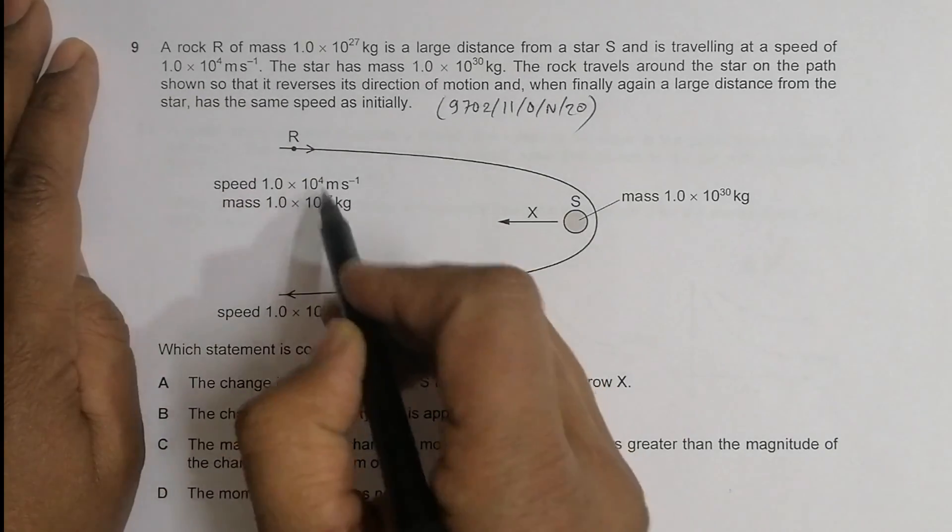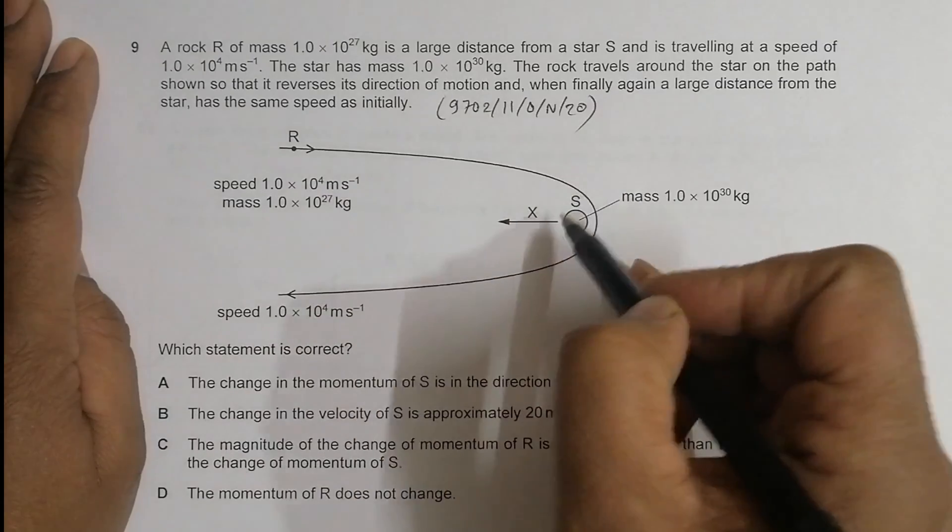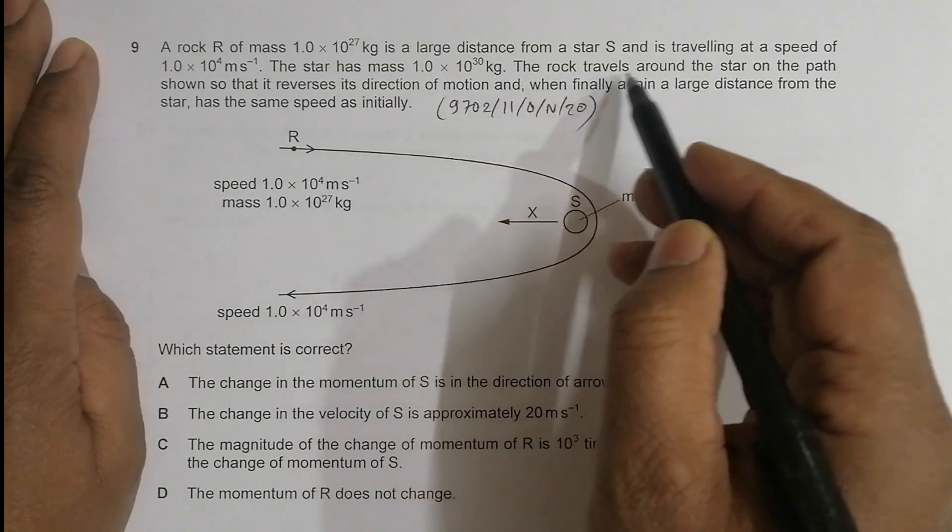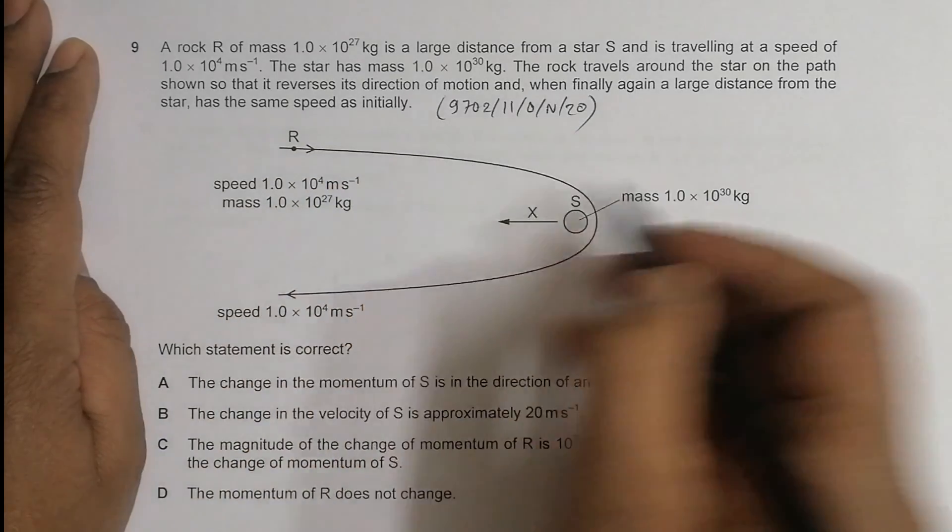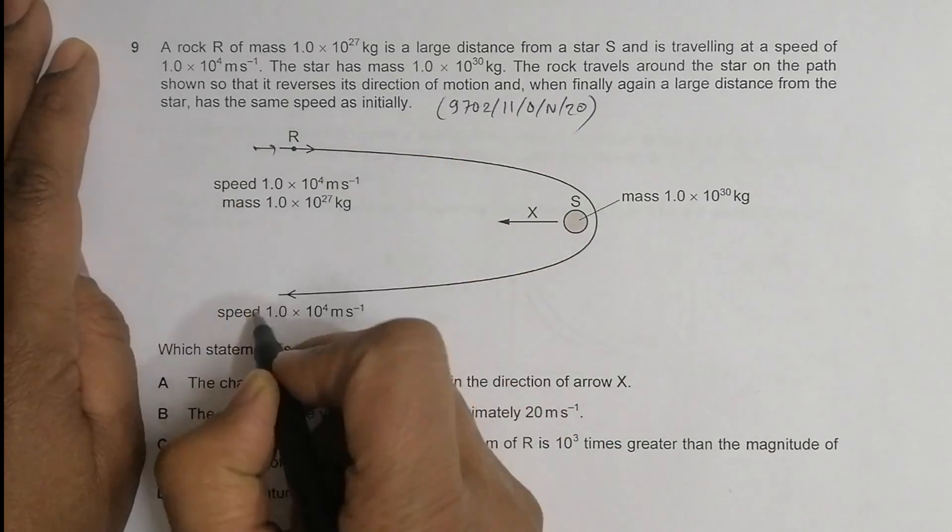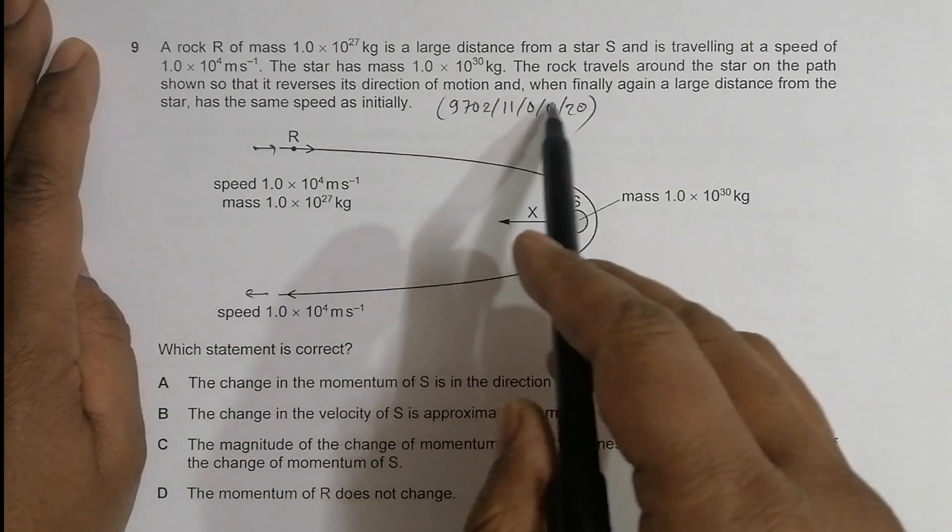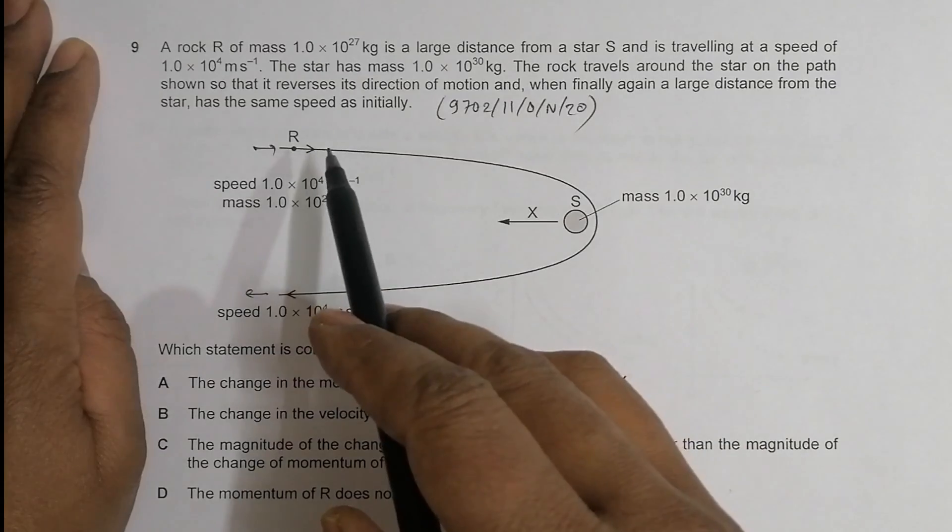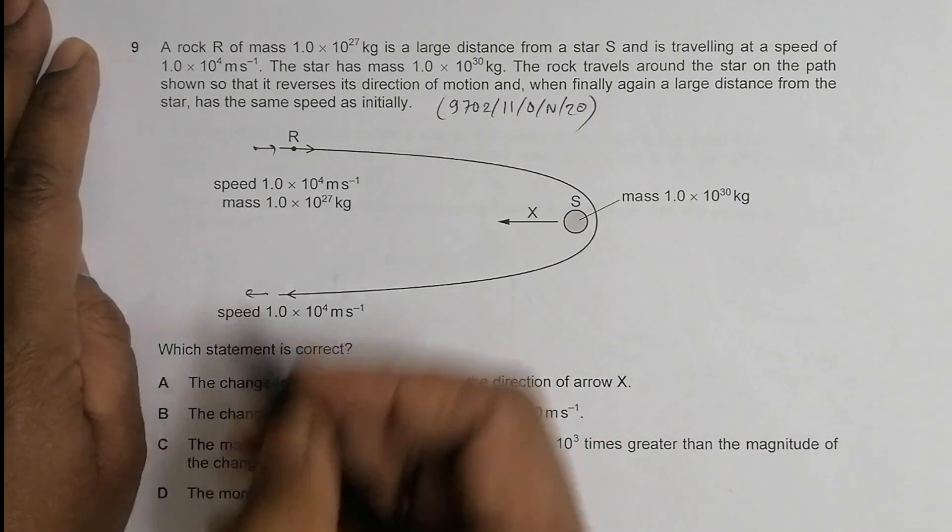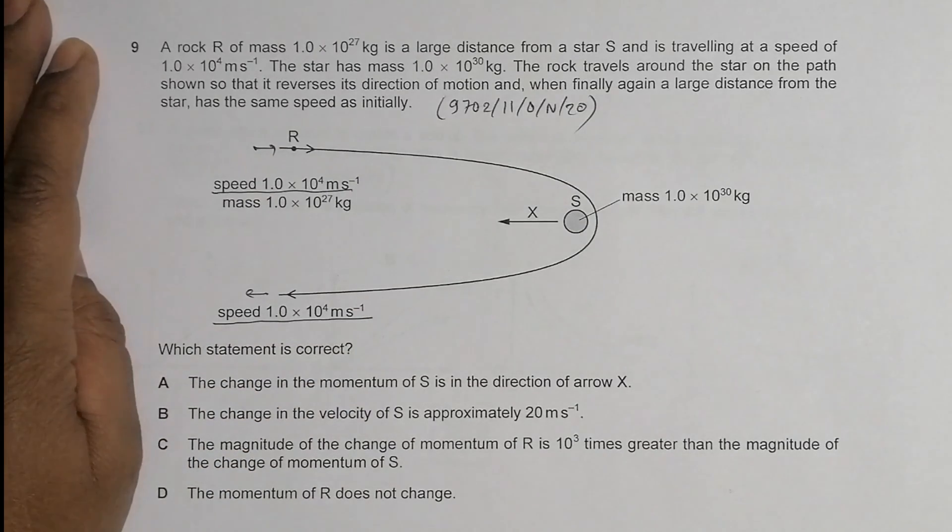The star has mass 1.0×10³⁰ kg. The rock travels around the star on the path shown so that it reverses its direction and, when finally again a large distance from the star, has the same speed as initially. So the speed here, here, and here are the same, which is 1.0×10⁴ m/s.